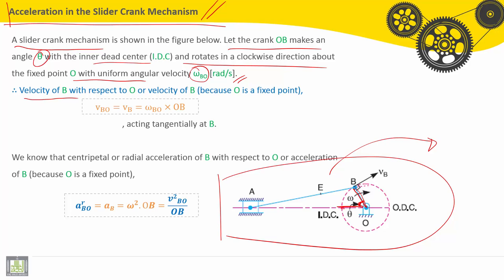Velocity of B with respect to O, or velocity of B (because O is a fixed point), is VBO equals VB equals omega BO multiplied by the length of the crank OB, acting tangentially at B.